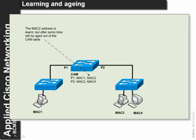A key concept is that machines are connected and disconnected from a network on a regular basis. So it is important that addresses are aged out. We typically have an aging process where all MAC addresses must be relearned after a certain amount of time. Once a MAC address — such as MAC 2 — has been aged out because the node is no longer connected, it will eventually be deleted from the CAM table.